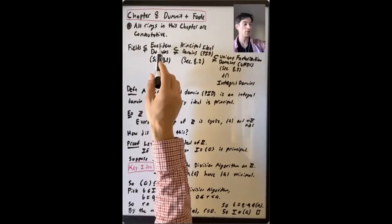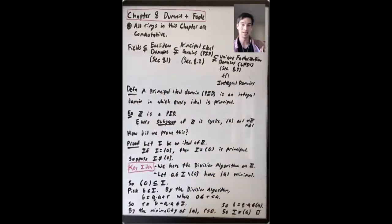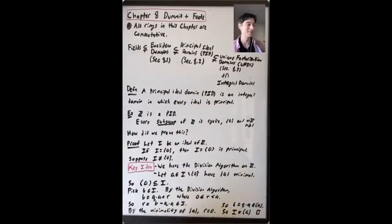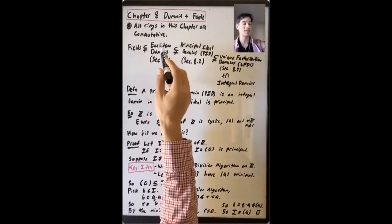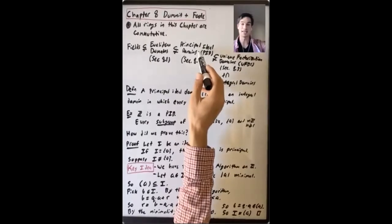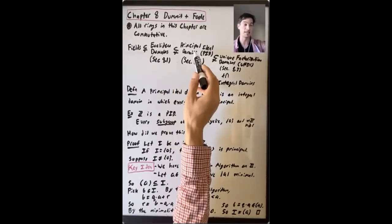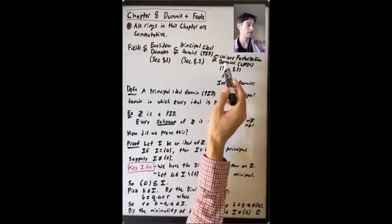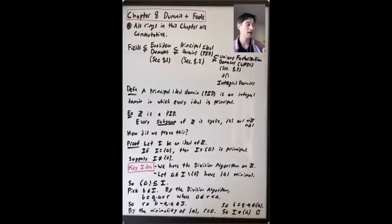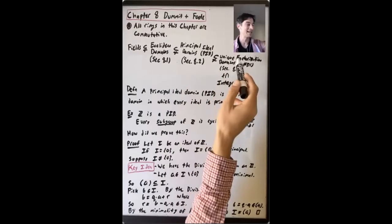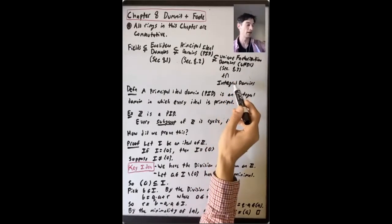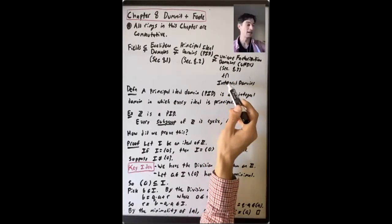Fields are Euclidean domains, but not every Euclidean domain is a field. We have principal ideal domains, or PIDs, the subject of Section 8.2 of Dummit and Foote. Every Euclidean domain is a PID, but the converse is not true — there are PIDs that are not Euclidean domains. Then we have unique factorization domains, UFDs, the subject of Section 8.3. Every PID is a UFD, but not every UFD is a PID, and UFDs are integral domains, but not every integral domain is a UFD.